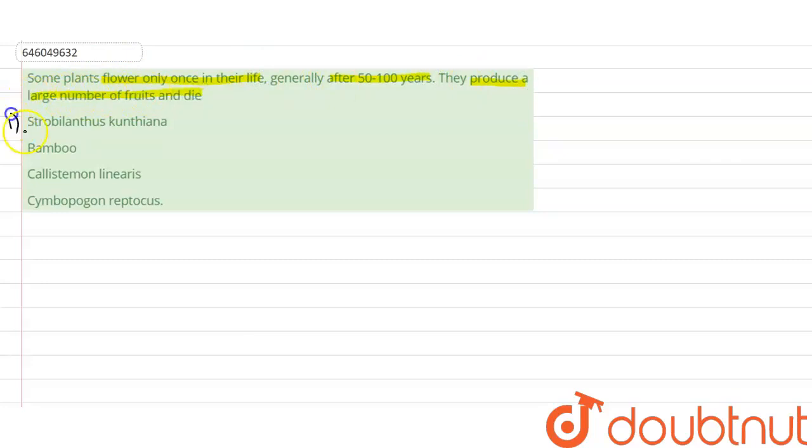So the options are Strobilanthus cunthiana, bamboo, Calistemon linearis, and option 4, Sympogon raptocus.